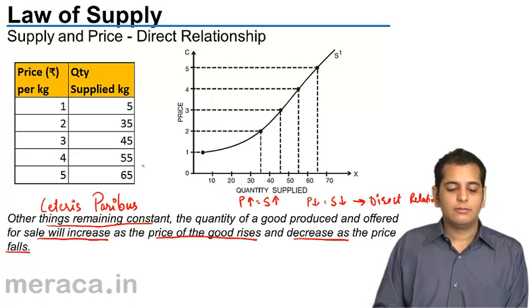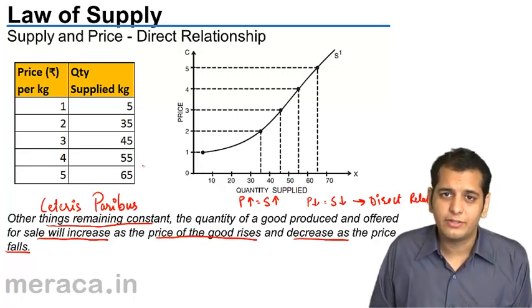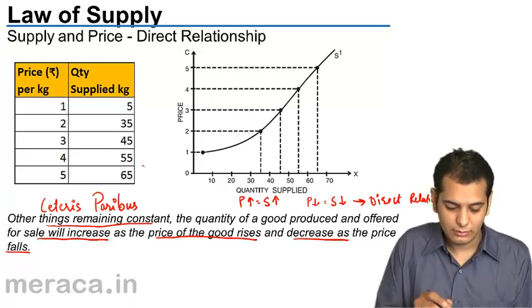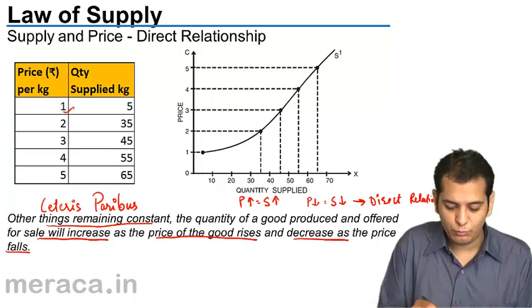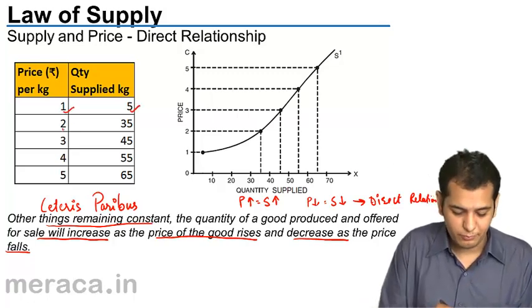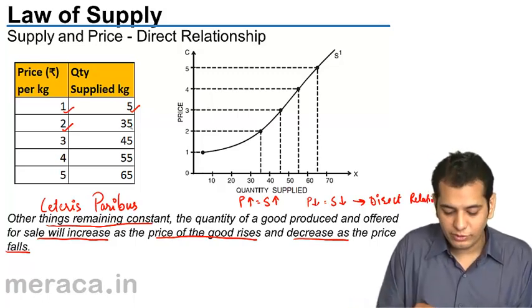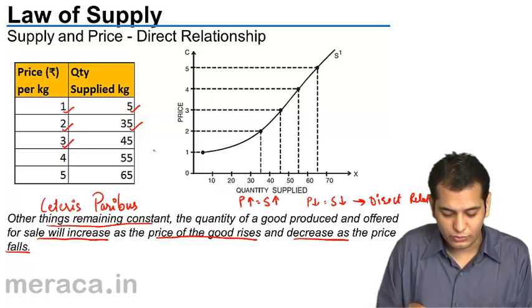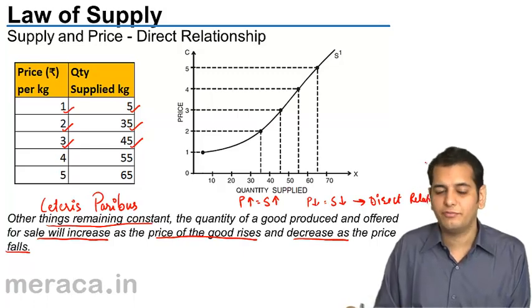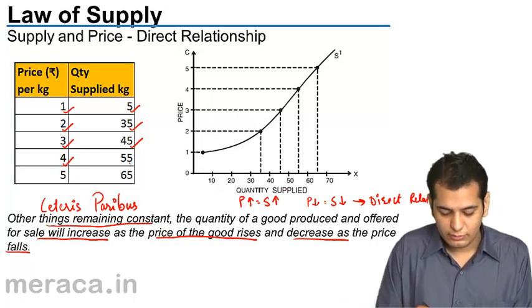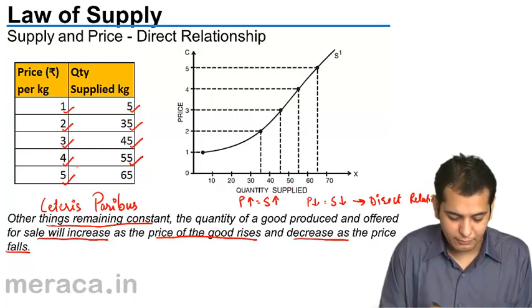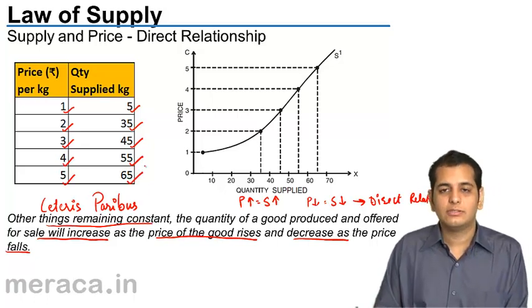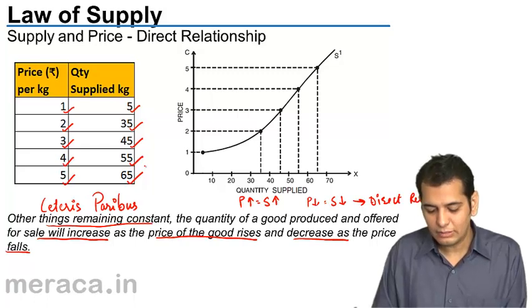Now let's understand this better with the help of a schedule and a graph. This schedule explains the price per kg of rice and the quantity supplied at that price. When the price is 1, quantity supplied is 5; price 2, quantity supplied is 35; price 3, quantity supplied is 45; price 4, supply becomes 55; and when price is 5 per kg, quantity supplied increases to 65 kg.